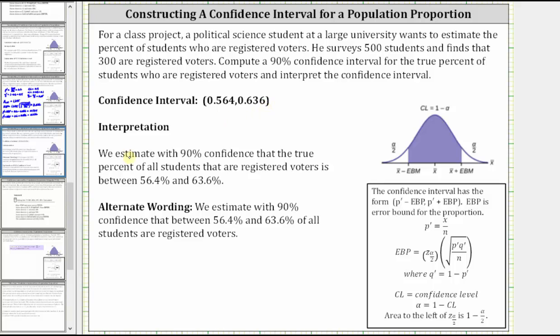This means we estimate with 90% confidence that the true percent of all students that are registered voters is between 56.4% and 63.6%. We can also say we estimate with 90% confidence that between 56.4% and 63.6% of all students are registered voters. I hope you found this helpful.